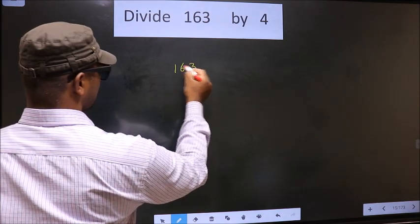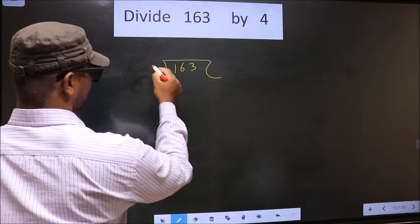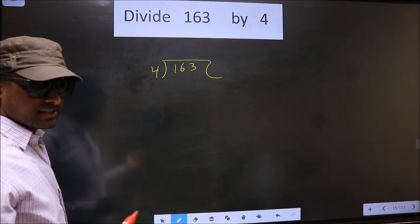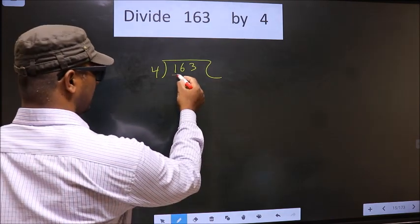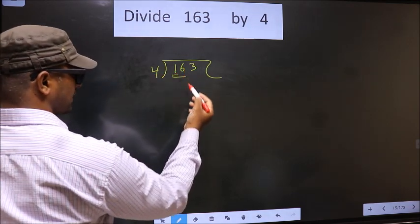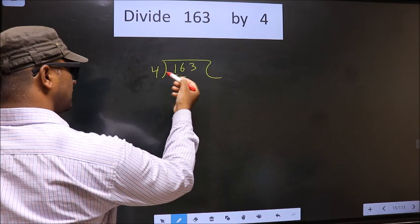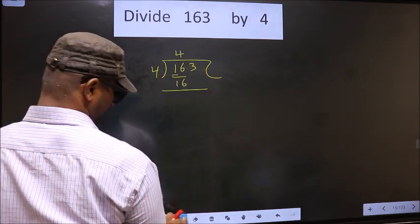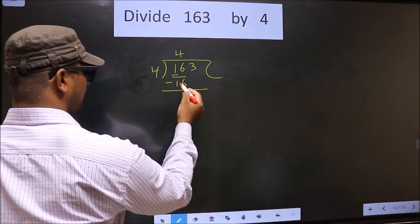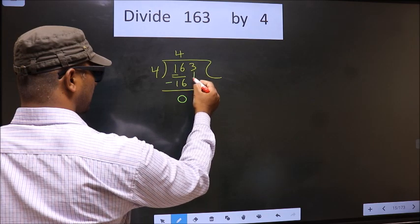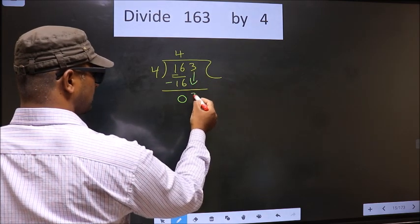That is 163 divided by 4. Now here we have 1, smaller than 4. So we take 2 numbers, that is 16. When do we get 16 in 4 table? 4 times 4 is 16. Now you subtract. 16 minus 16 is 0. Now you bring down the beside number, that is 3.